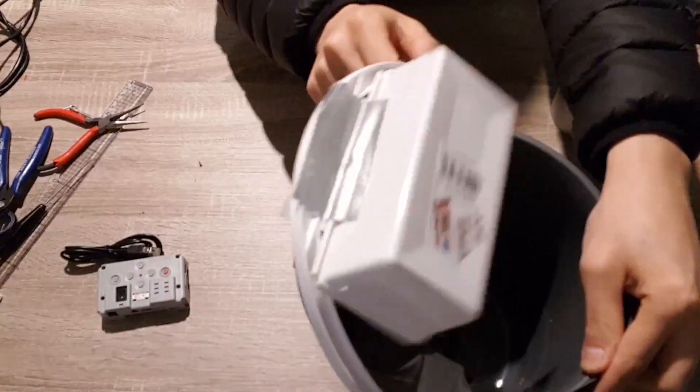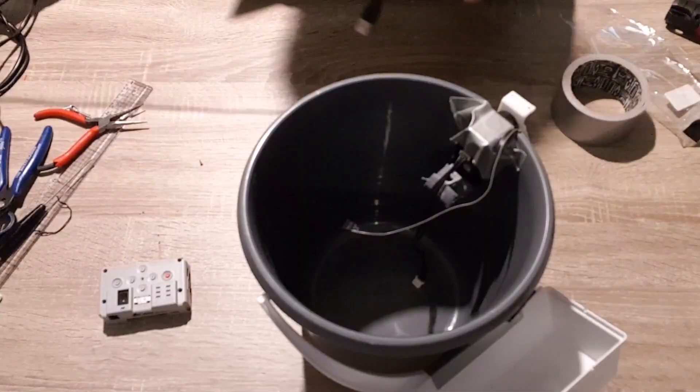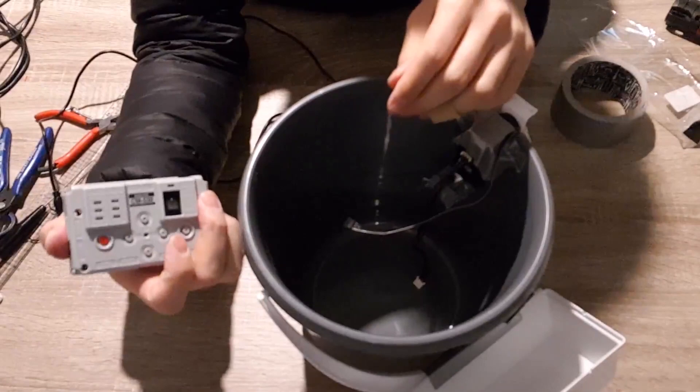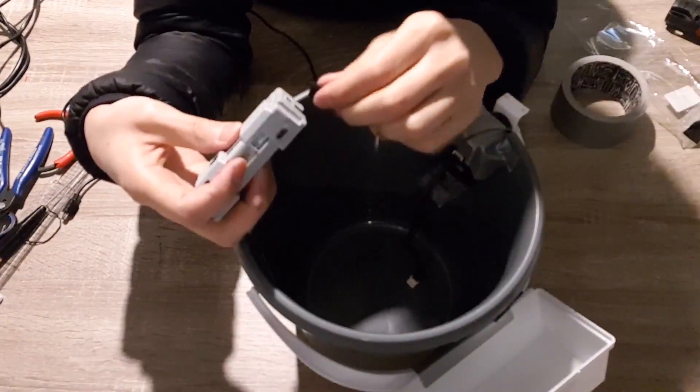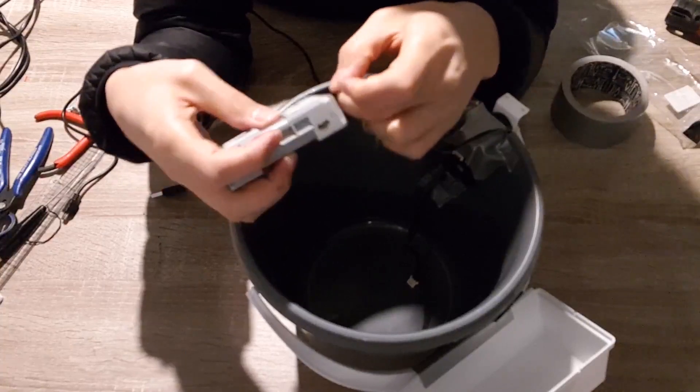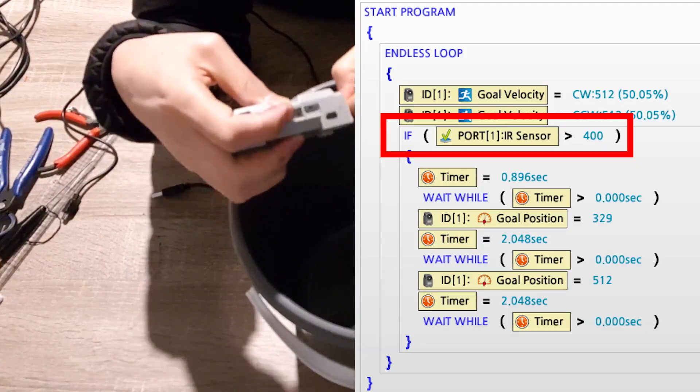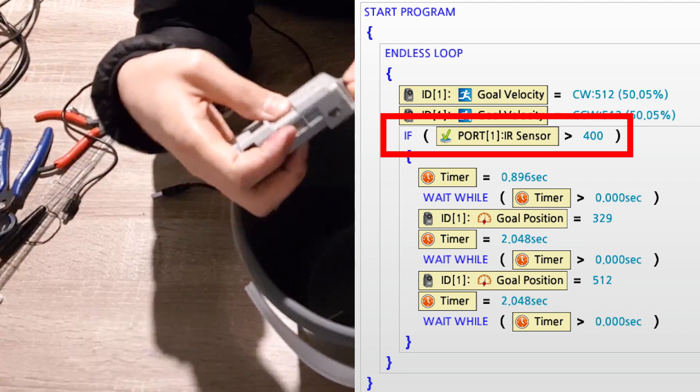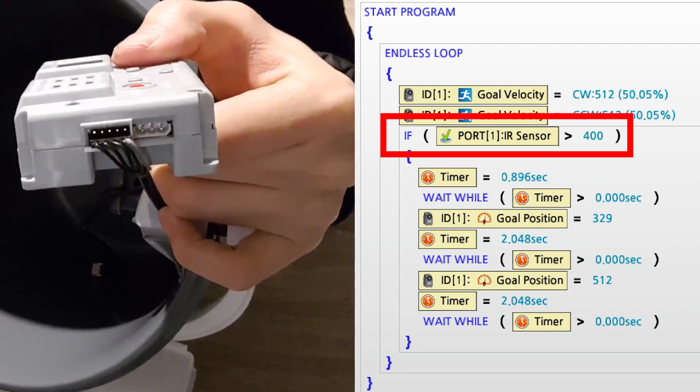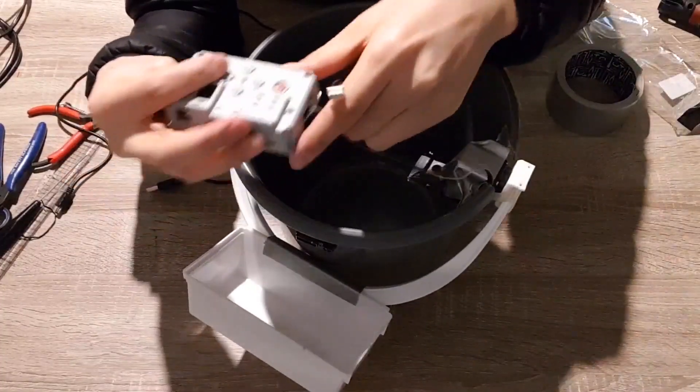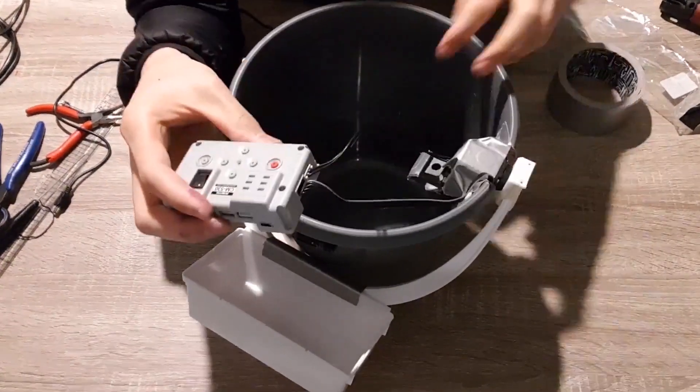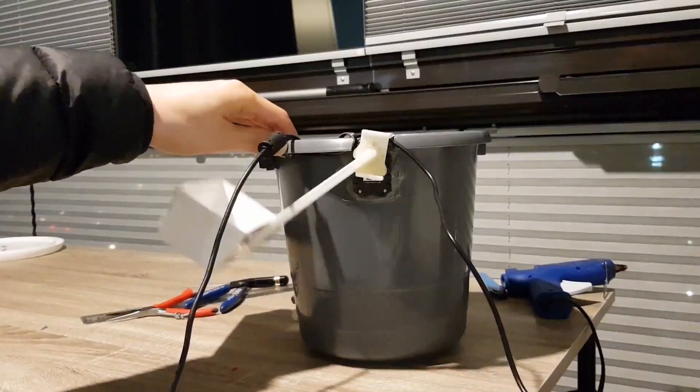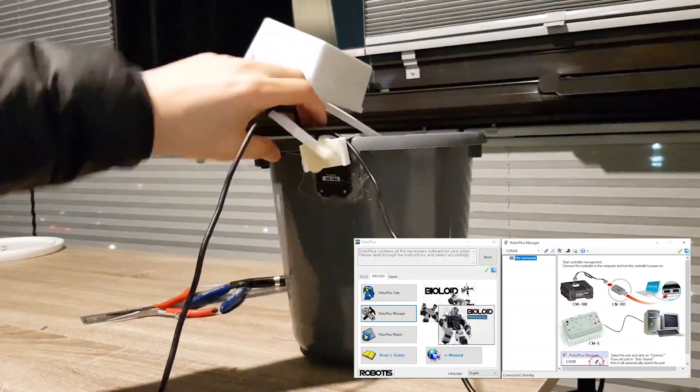I connected the sensor with port number one on the controller. You may need to remember the port number because we need to read the port status in the program. I also put the other cable which is from the servo motor on the controller. I tested it briefly with a manager program for the servo motor.